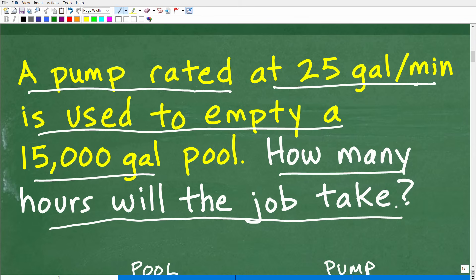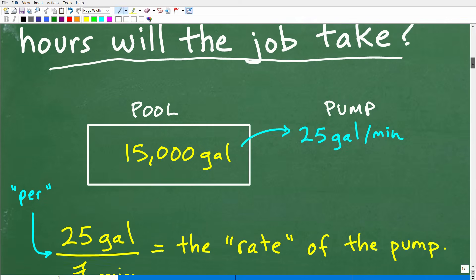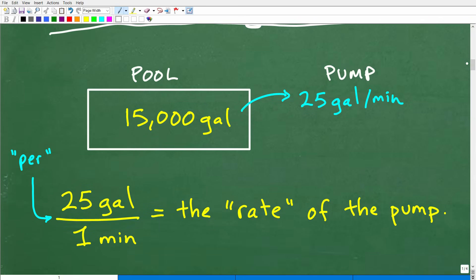After you read a math word problem, you want to try to model the situation. So oftentimes it's helpful to draw a little sketch. So draw yourself a little pool. There's 15,000 gallons. We want to empty this pool out with this pump that can pump out 25 gallons per minute. So this pump's rating, its capacity is given to me in gallons. I know I can take out 25 gallons per minute.